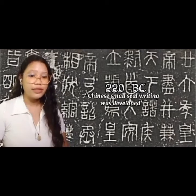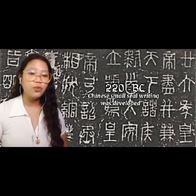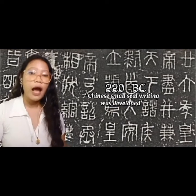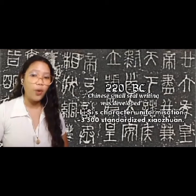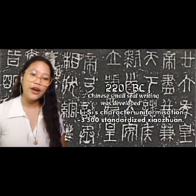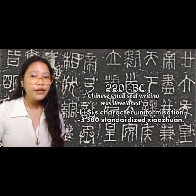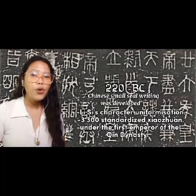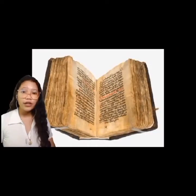Let's go to 220 BC, where Chinese small seal writing was developed. About 220 BC, Emperor Qin Shi Huang, the first to conquer the entire Chinese Basin, imposed several reforms. Among them was the character uniformization, which created a set of 3,300 standardized Xiaozhuan — or small seal script — characters. It was specifically devised as a standardized system of writing under the first emperor of the Qin dynasty, who reigned from 221 to 209 BCE.